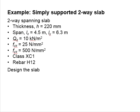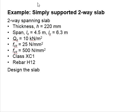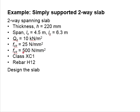Let us try an example to design a simply supported two-way slab. The thickness is 220 mm, the span is 4.5 meters in the shorter span and 6.3 meters for the longer span. The QK is 10 kilonewton per meter square, the concrete strength is 25 MPa, and the steel strength is 500 MPa. The slab has the exposure class of XC1 and H12 reinforcement bar is expected to be used.